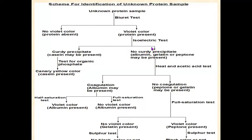In the isoelectric test, if you are not getting any curdy precipitate — no curdy precipitate — then your sample may be albumin, gelatin, or peptone; any one of these three may be present. To identify further, you carry out the next test: the heat and acetic acid test. When you do this test, coagulation of the sample may be there or no coagulation may be there.